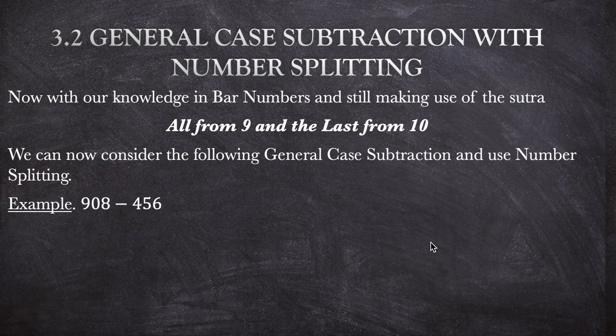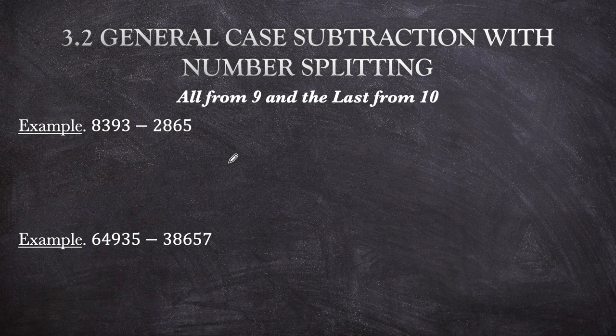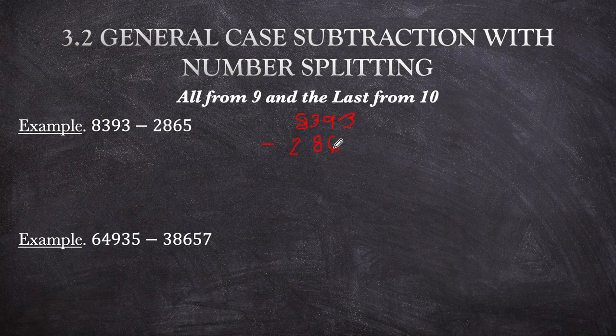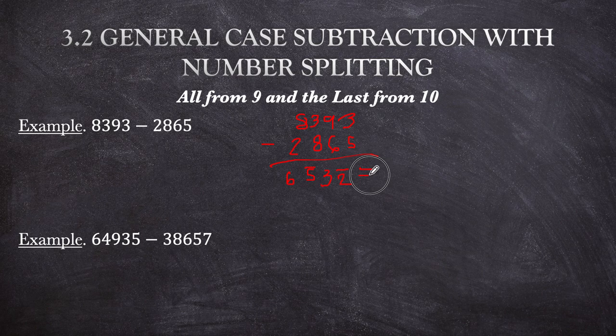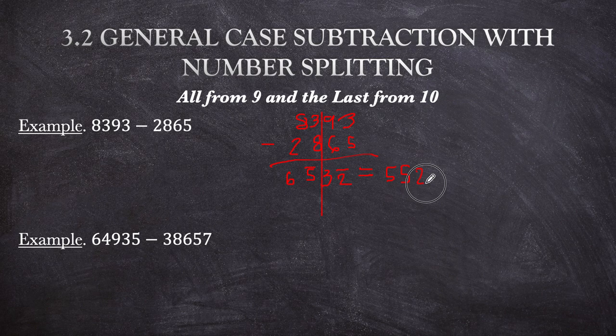More examples for number splitting: 8,393 minus 2,865. So: 8 minus 2 is 6; 3 minus 8 is bar 5; 9 minus 6 is 3; 3 minus 5 is bar 2. Splitting: 6 bar 5 gives 55, and 3 bar 2 gives 28. So answer: 5,528.